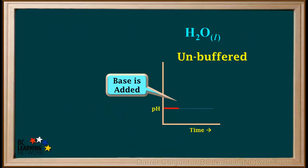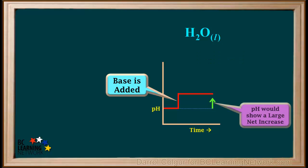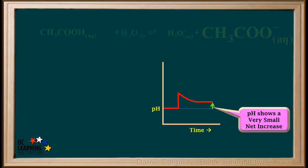If there were no buffer solution present and we added a base to water, the pH would quickly rise. But there's nothing to buffer this rise, so the pH will remain at this level and show a large net increase in the overall process, instead of the small net increase experienced by the buffer solution. The buffer has accomplished its purpose — it has minimized the change in pH resulting from the addition of a base.